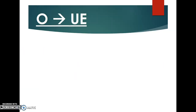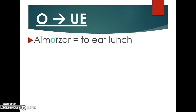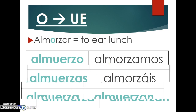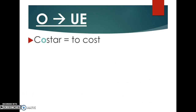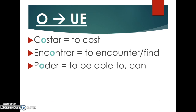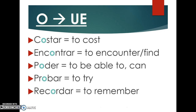The next category is O to UE. An example is 'almorzar,' which means 'to eat lunch.' It conjugates as: almuerzo, almuerzas, almuerza, almorzamos, almorzáis, almuerzan. Pay close attention to pronunciation — in the yo form 'almuerzo,' you clearly hear the UE stem change, while in the nosotros form 'almorzamos,' you do not. Additional O to UE verbs include: costar (to cost), encontrar (to find), poder (to be able to/can), probar (to try), recordar (to remember), and volver (to return).